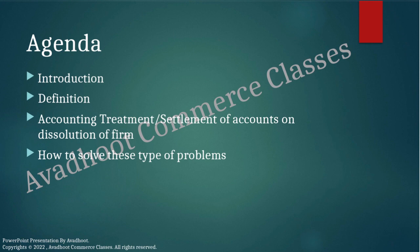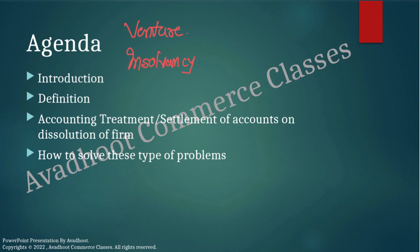Another reason is completion of a specific venture. A venture means a particular project. When a partnership completes that particular venture, it is going to be dissolved automatically. Another is insolvency — we can say bankruptcy — or if a partner becomes of uncertain mind, by that way also the partnership firm can be dissolved. If it is doing any unlawful activity, then also it can be dissolved.